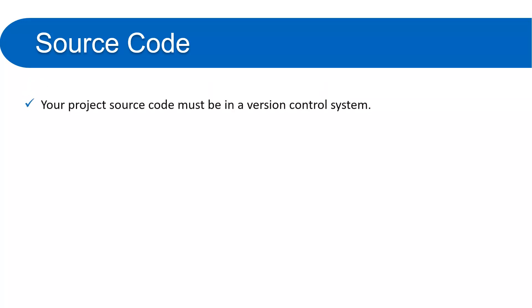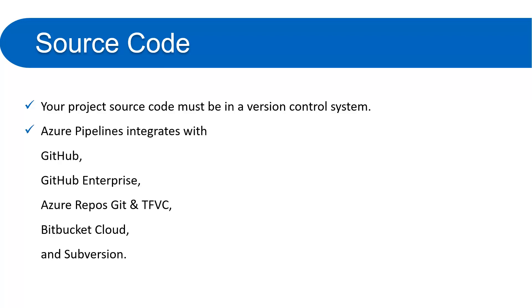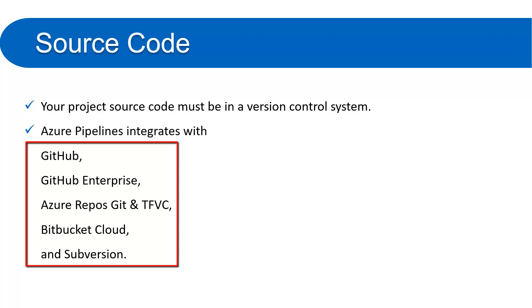Where should your repository be? Your project source code must be in a version control system — this is the main requirement. Azure Pipelines integrates with GitHub, GitHub Enterprise, Azure Repo (Git and TFVC), Bitbucket Cloud, and Subversion. In future the number of supported repositories may change, but at the time of recording these are the repositories supported by Azure DevOps.